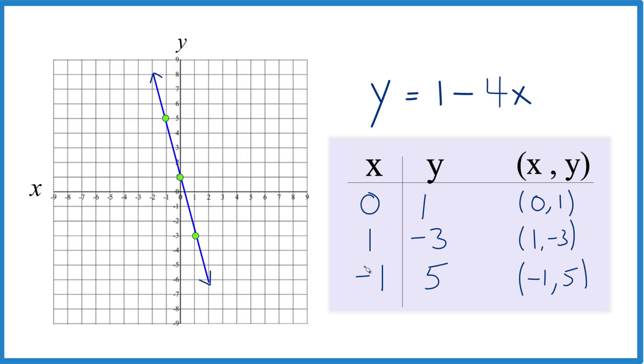And any points you put in for x, they'll give you a value for y. And that point, it'll be somewhere here on this line. So that's it. This is Dr. B looking at linear equation y equals 1 minus 4x, and we used a table of values to graph that. Thanks for watching.